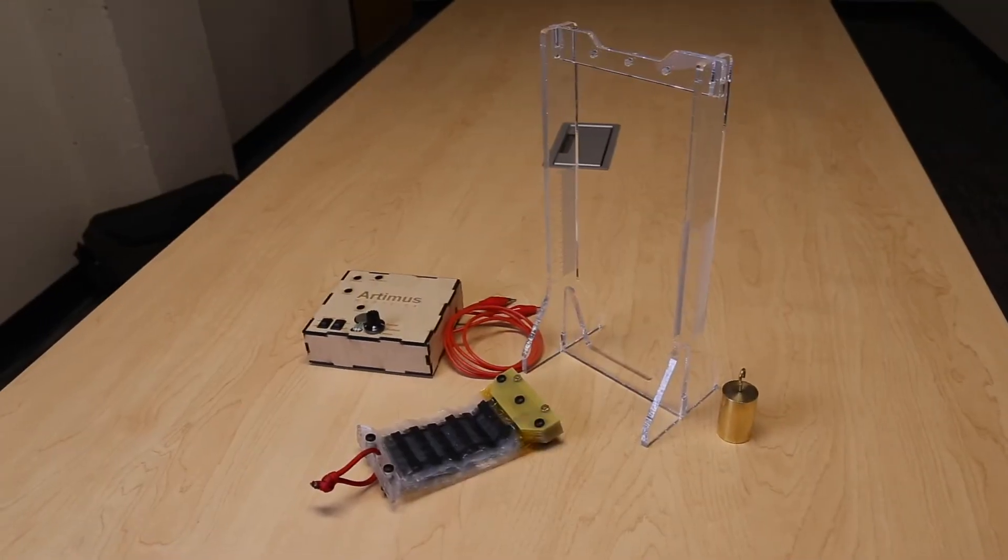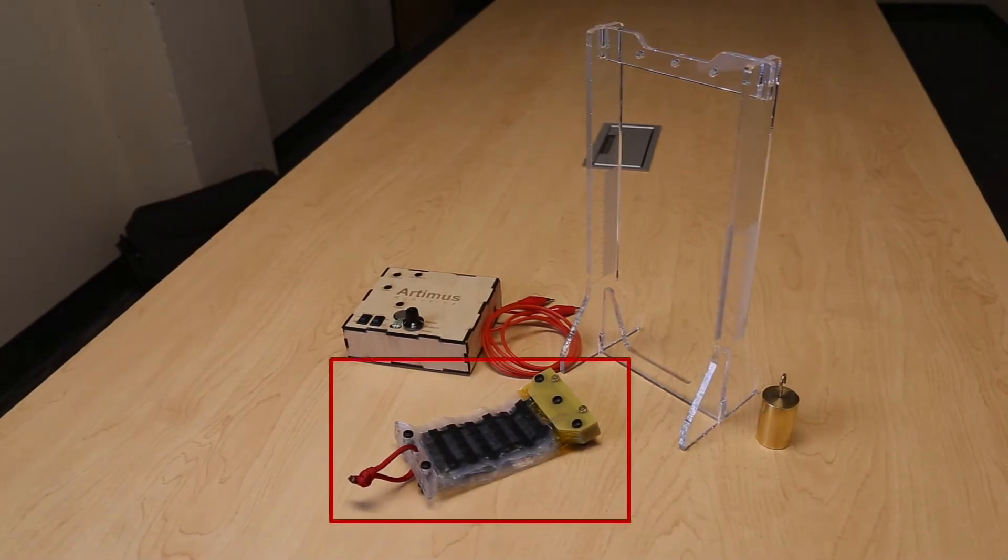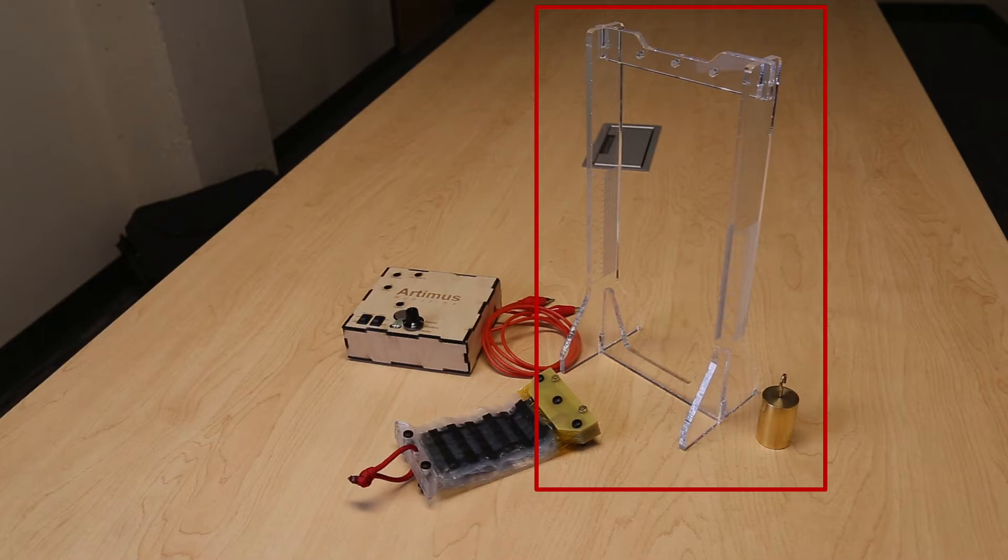This development kit comes with everything you need to use Hazel Actuators. This includes a stack of five Hazel Actuators, a portable power supply to activate the actuators, and peripheral accessories such as a stand and demonstration weight.